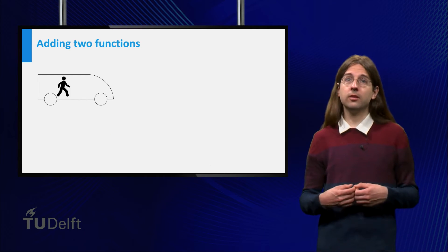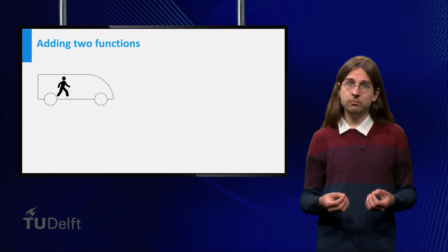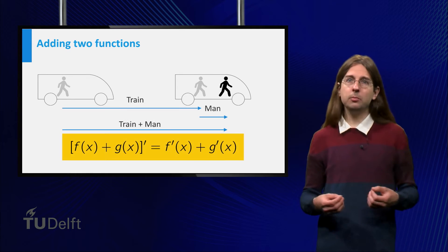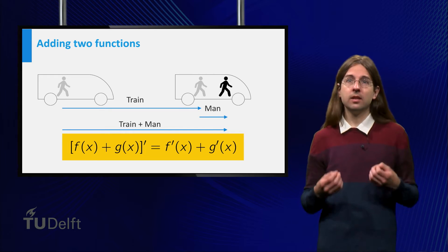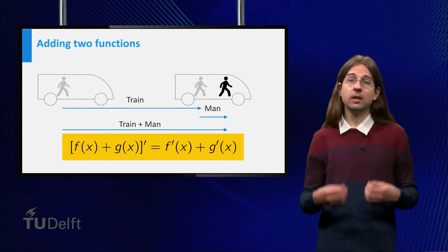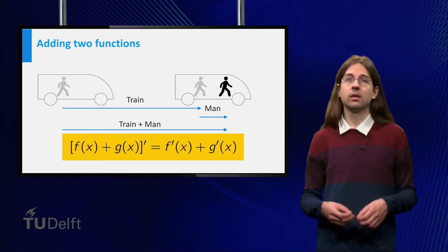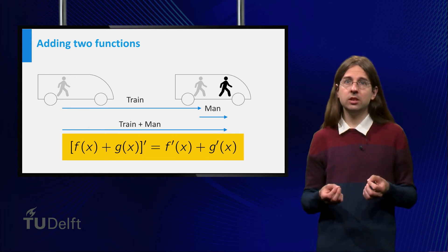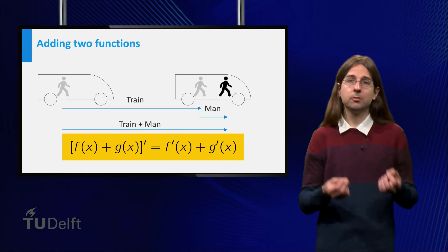Next we consider the addition rule by looking at someone walking in a moving train. The speed of the boy with respect to the track equals the sum of the speed of the train and his walking speed. That is, the derivative of f plus g equals f prime plus g prime.